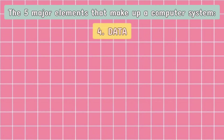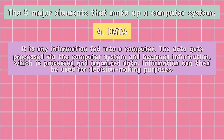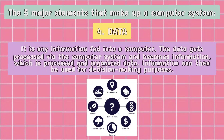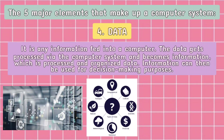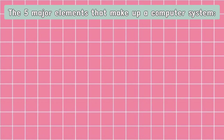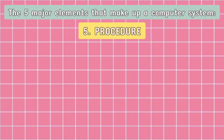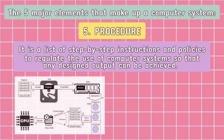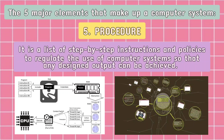The fourth element is data. It is any information fed into a computer. The data gets processed via the computer system and becomes information, which is processed and organized data. Information can then be used for decision-making purposes. And the fifth element is procedure. It is a list of step-by-step instructions and policies to regulate the use of computer systems so that any designed output can be achieved.